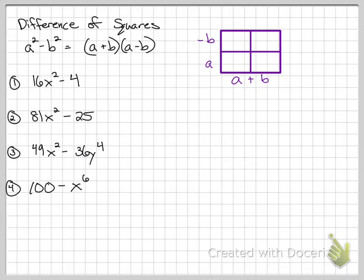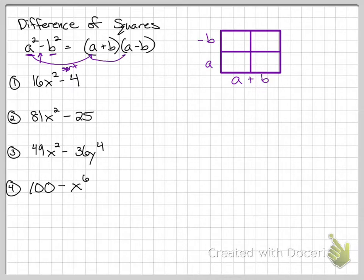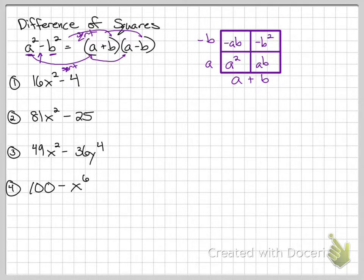Next up is difference of squares — still on two terms. If it looks like a² minus b², it will always factor to be (a + b)(a − b). The a comes from square rooting a², and the same for b. To see why this works: (a − b)(a + b) expands to a² − ab + ab − b², and the middle terms cancel, leaving a² − b². That's why the difference of squares formula works.